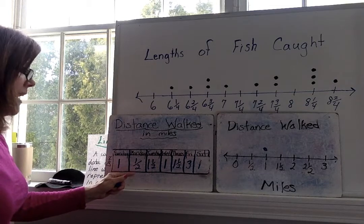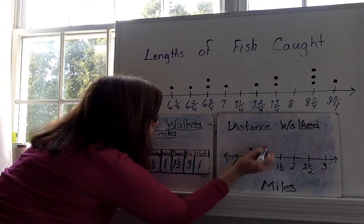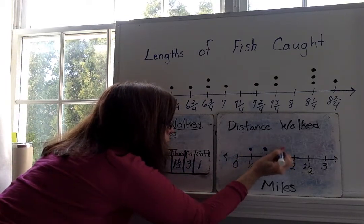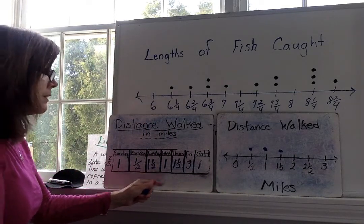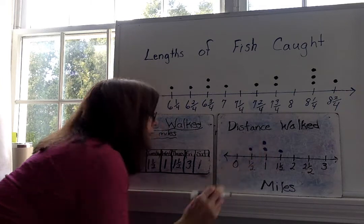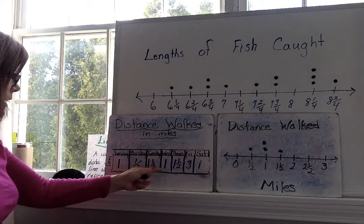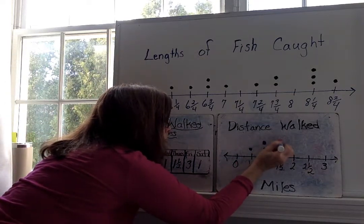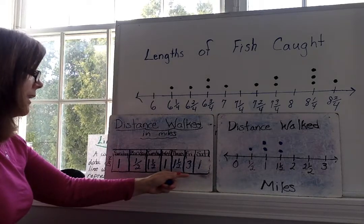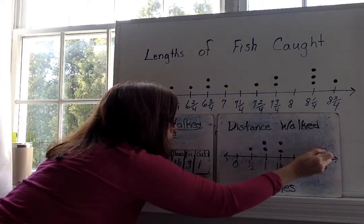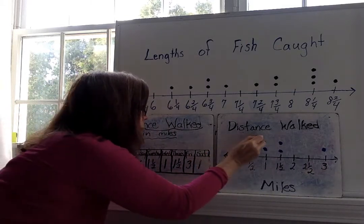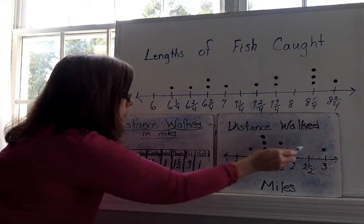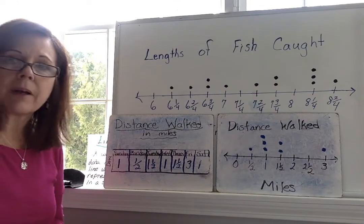Sunday was one, so I can put one dot above the one mile. And then, Monday was a half mile. So, Monday is going to be right here. Tuesday was one and a half. So, here's representing Tuesday. Wednesday was one. So, now I'm going to put another dot above one, because I have another day where I walked one. I walked on Sunday and Wednesday one mile. Thursday, I walked one and a half. So, now I've got another one and a half. Friday, I walked three. And then, Saturday, one. So, when I'm done, I should have seven. One, two, three, four, five, six, seven. Yes, so every day has been represented by a dot.